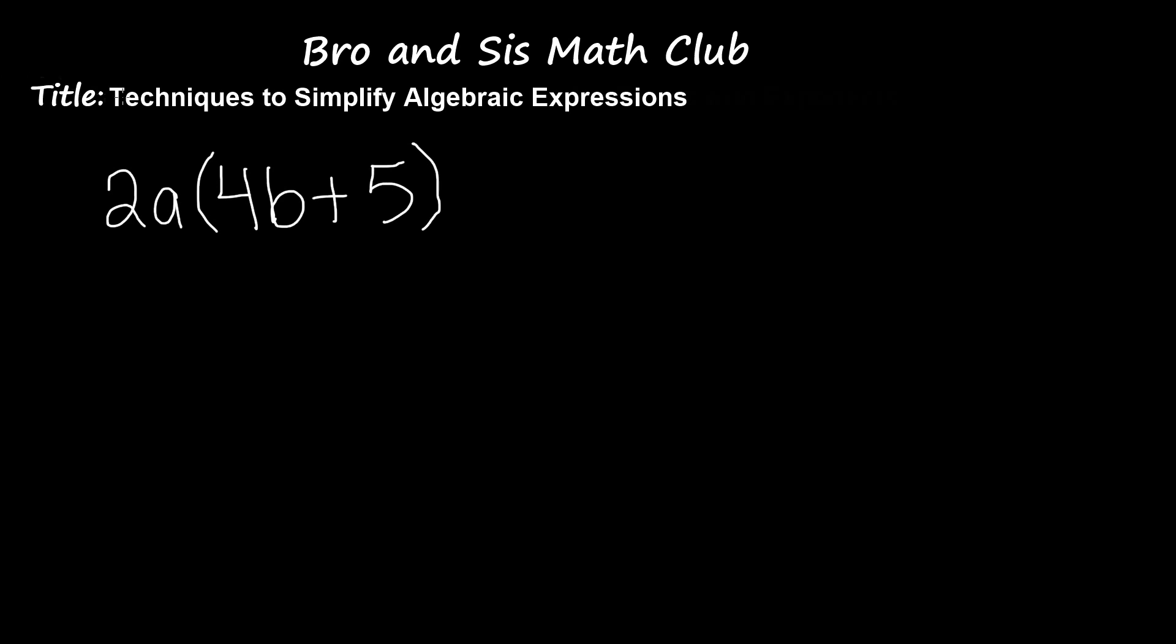So we're going to be multiplying 2a times 4b, and then 2a times 5. 2a times 4b gives us 8ab. 2a times 5 gives us positive 10a. This is the simplified form of this expression.